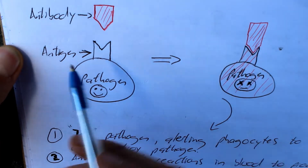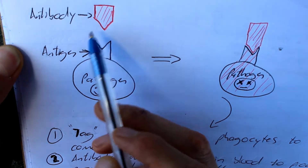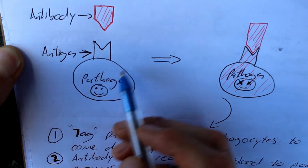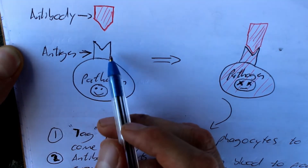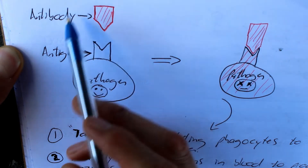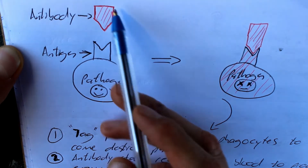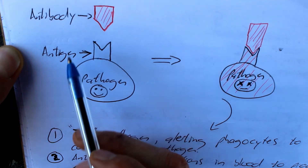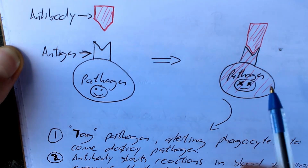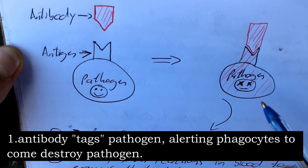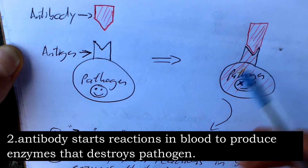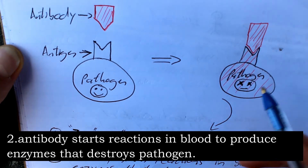Antibodies work by binding to an antigen with a complementary shape. Antibodies are specific to different antigens, and an antigen is simply a molecule on the surface of a pathogen which has the capacity to bind to antibodies. Once the antibody has bound to the antigen, it forms the antibody-antigen complex. This tags the pathogen to alert phagocytes to come and destroy it, or triggers reactions in the blood that produce enzymes to destroy the pathogen.